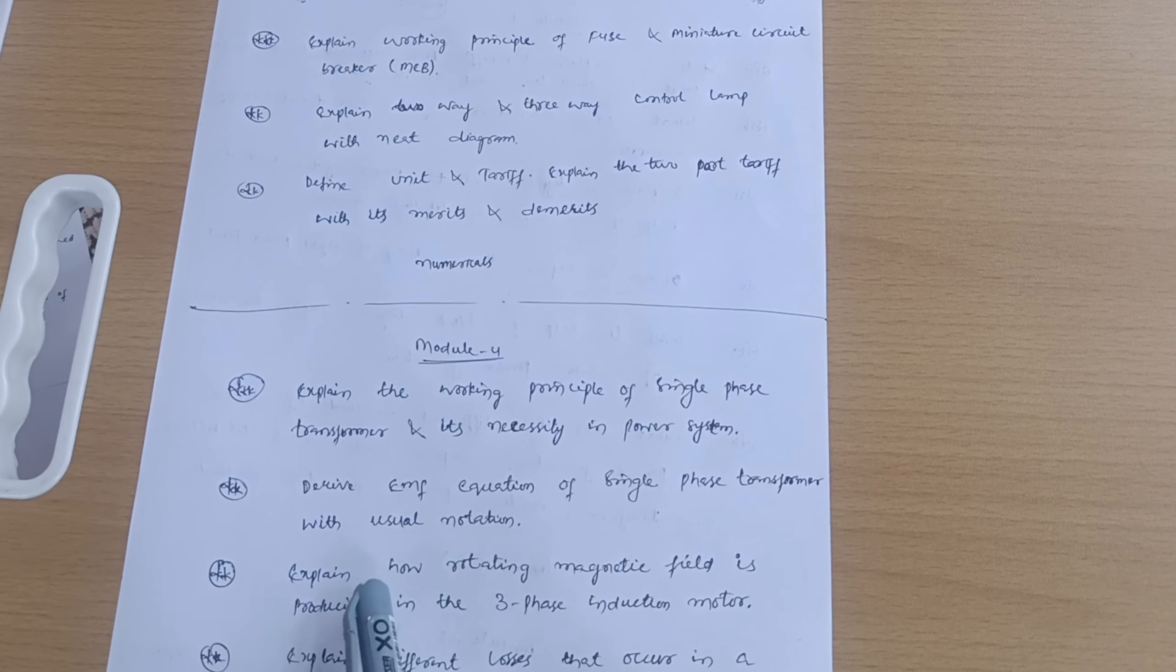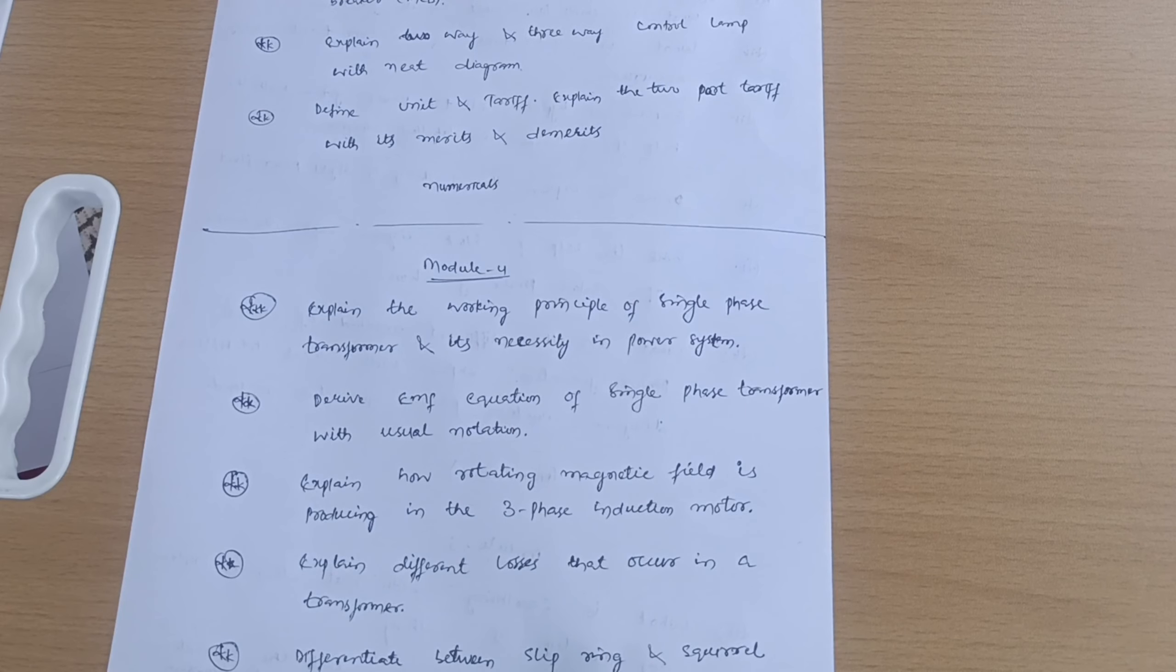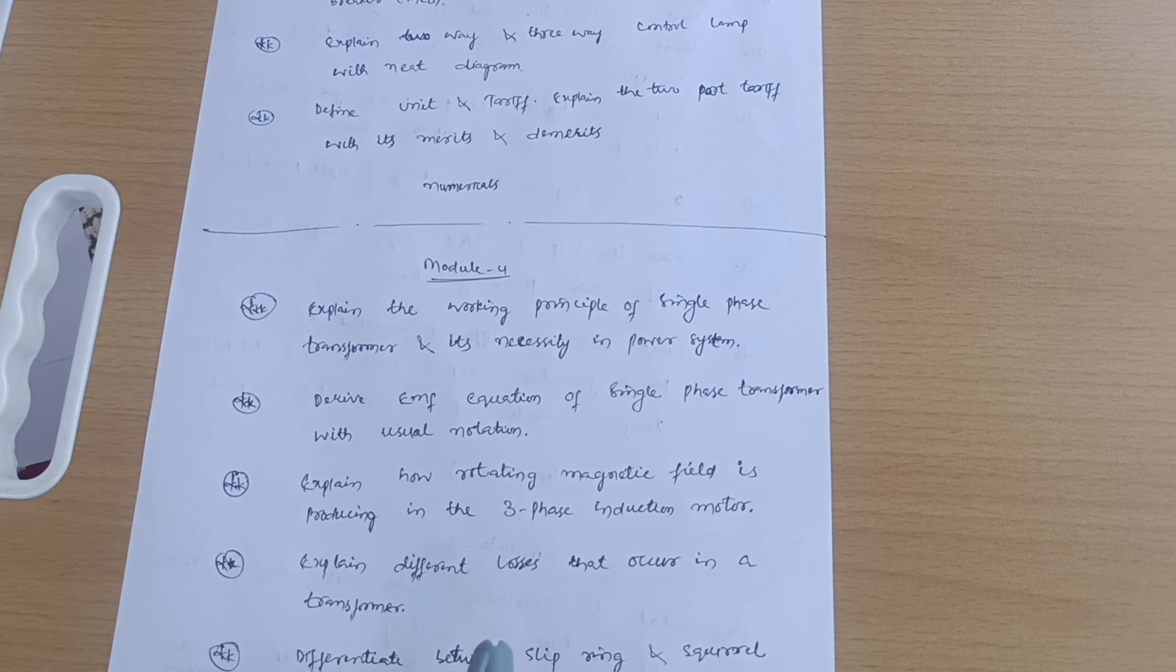Explain how rotating magnetic field is producing in three-phase induction motor. Explain different losses that occur in a transformer. Differentiate between slip ring and squirrel cage rotors, write down their significance. Simple numericals are there. You should at least try some numericals. These are five questions from Module 4.